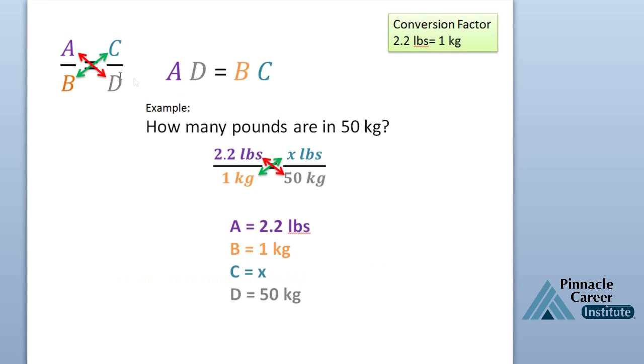We're going to take our original formula. Here I've written it again where I have 2.2 pounds over 1 kilogram equals x pounds over 50 kilograms. You can see I've drawn the red and green arrows. Using this formula right here, you can see that a equals 2.2 pounds, b equals 1 kilogram, c equals x pounds, and d equals 50 kilograms.